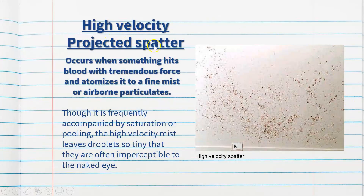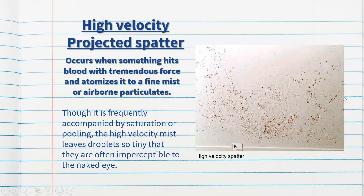High velocity projected spatter occurs when something hits the blood or body with tremendous force, atomizing it into a fine mist or airborne particles, as pictured here. It is frequently accompanied by saturational pooling, but the droplets are so tiny they are often indistinguishable to the naked eye — technology and special chemicals are required to view them properly. This is very common with gunshots, car accidents, or explosions. That concludes the revision video on the different types of blood spatter. If you have any questions, let me know — happy revising.